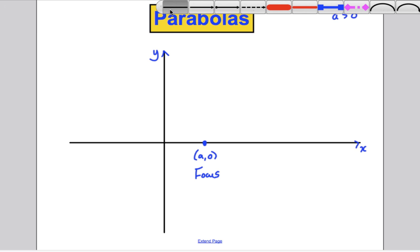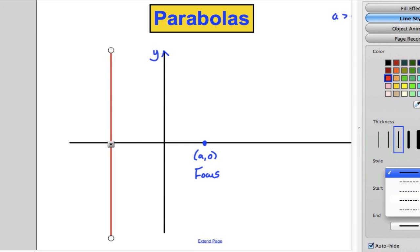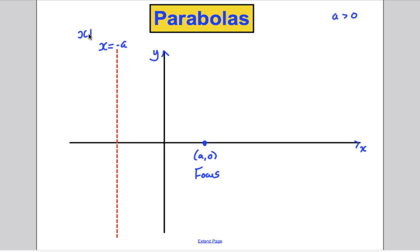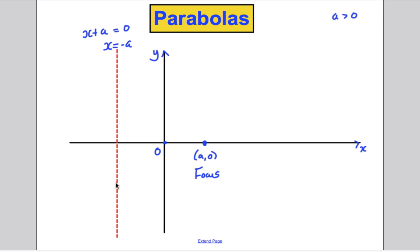Now I'm going to draw a straight line — I'll colour it differently so we don't get confused — and that straight line is going to be the line x equals negative a, or equivalently x plus a equals zero. It's a distance of a from the origin, just as the focus point is. I'm going to give this line the name: the directrix.